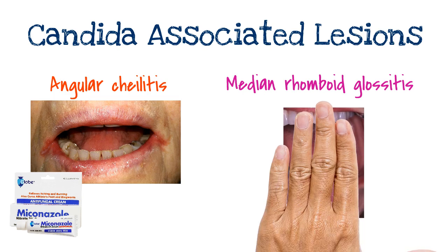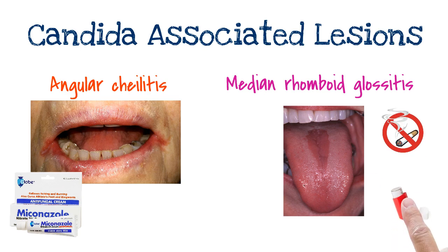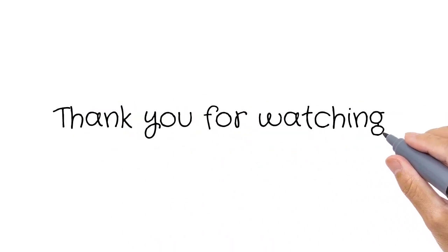Median rhomboid glossitis characteristically presents as a smooth, well-demarcated area of erythema at the junction of the anterior two-thirds and posterior one-third of the tongue. A similar erythematous patch, the so-called kissing lesion, can sometimes be seen on the adjacent hard palate. It is typically asymptomatic or patients may complain of mild soreness. It is associated with smoking and inhaler use. Treatment consists of systemic antifungal agents such as fluconazole and itraconazole.